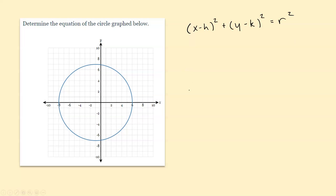First we want to pinpoint where the center is. It looks like this is the highest point of the circle and this is the lowest point — that's positive 7 and negative 7 — so the center has to be right there, at point negative 1, 0. That means our h value is negative 1 and our k value is 0.